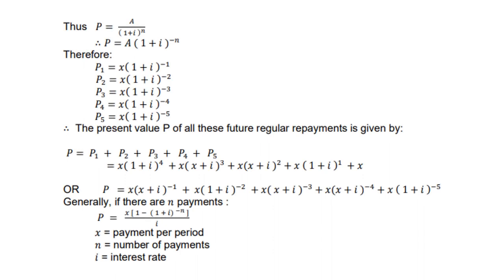So if we make P the subject, then we get P equals A over 1 plus i to the power n. So remember now where it's coming from. Therefore, P1 is x times 1 plus i to the power minus 1, then P2 is to the power minus 2, P3 is to the power minus 3, P4 to the power minus 4, P5 to the power minus 5.